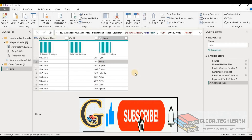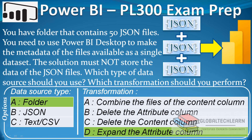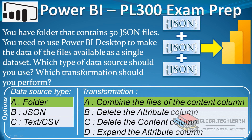Now let's go back to our questions with the answers. For the second question, where we must store metadata and ignore the underlying data, the data source type is Folder, and under transformation we expand the Attribute column to get all metadata fields. For the first question, where we need to store the data from all 50 JSON files, we again select Folder as the data source type, and under transformation we use Combine Files to combine the underlying data into one table. So Option A is the correct answer for Question 1.